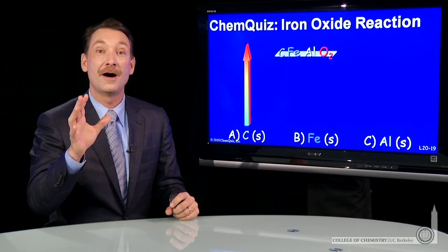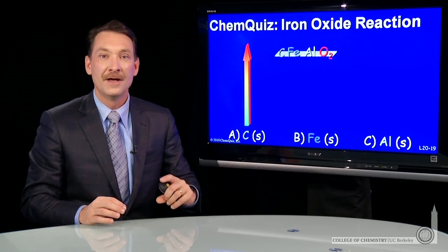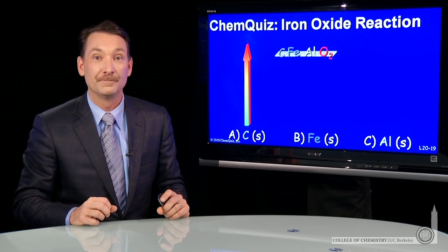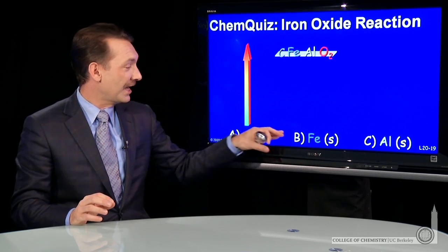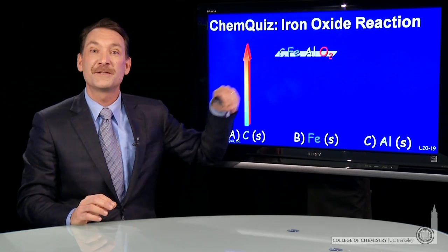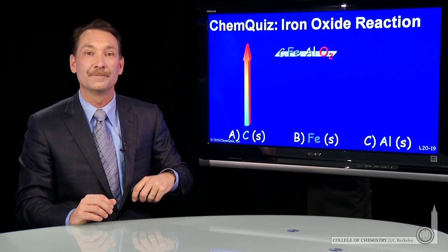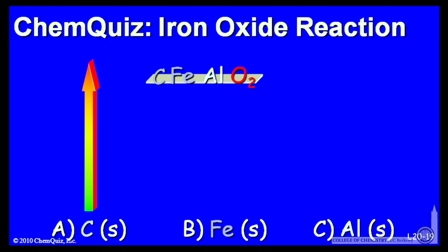We're talking about iron oxide reacting with carbon, iron, or aluminum to form molten iron metal and another oxide. Let's look at the possible oxides of carbon, iron, and aluminum with respect to the elements in their standard states. I'll put the elements carbon, iron, aluminum, and oxygen in their standard states at an arbitrary point on my enthalpy scale, and I'll call that the zero point in enthalpy.